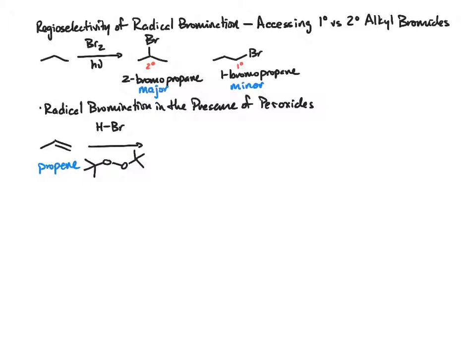Overall, these conditions as compared to the above conditions will give the 1-bromopropane as the major product. So compare that to above where it was the minor product. What we want to do now is understand how this mechanism works so that we can see how accessing a secondary versus a primary bromide actually occurs.